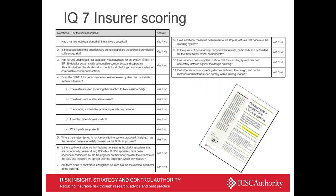In the IQ7 questionnaire we provide a scoring mechanism, deliberately placed at the start of the document. This is for you to score the quality and completeness of answers received back from submission of the questionnaire. It looks for whether the person completing the form shows good understanding of the materials, declares clearly what the certification route is, and covers off elements not listed anywhere else — to ensure a full and proper process has been followed. These are now on the Risk Authority website as interactive PDFs.